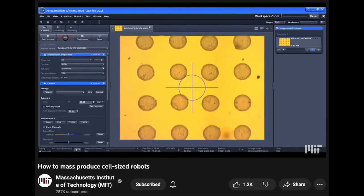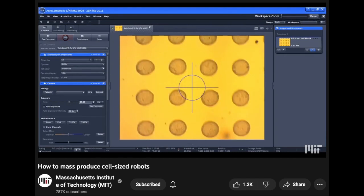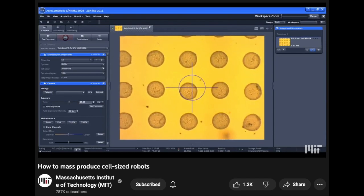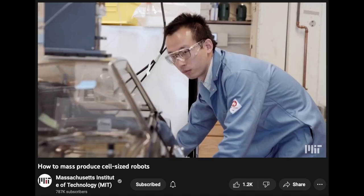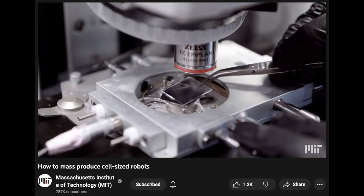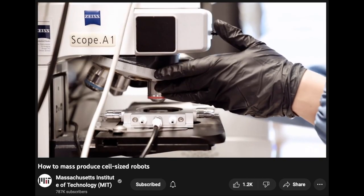Imagine if there was a way to mass-produce tiny robots no bigger than a cell quickly, easily, and accurately with little to no external stimulus. Well, a team of engineers at MIT have developed a novel method where they can do just that.